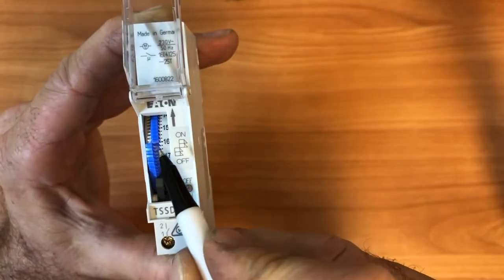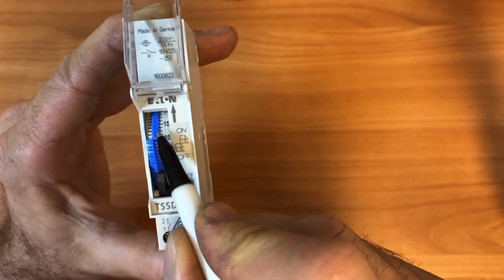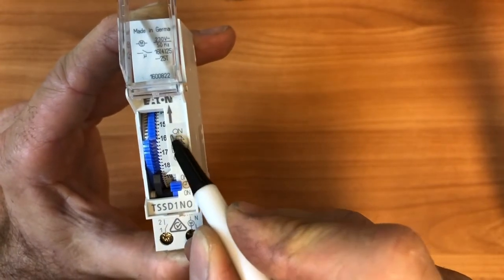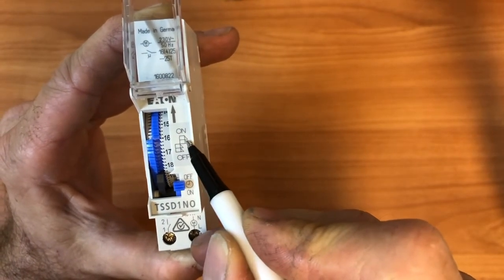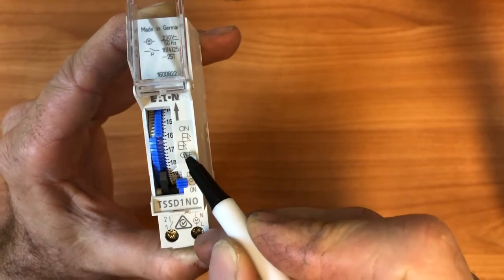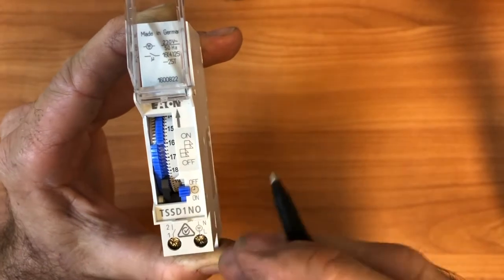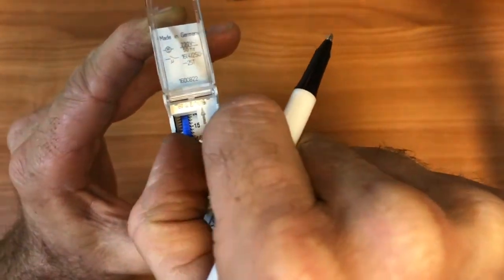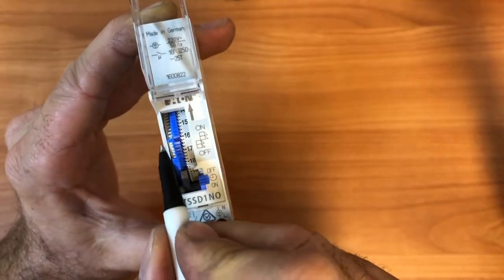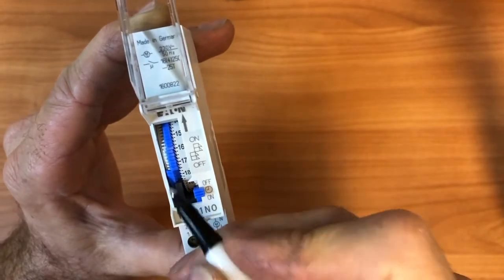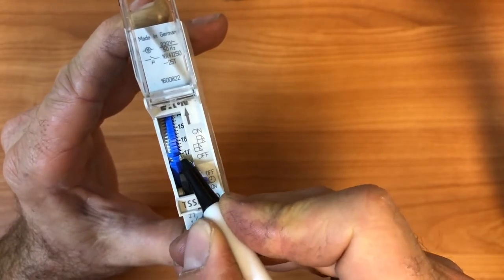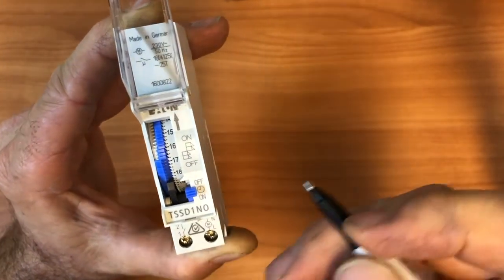And in this case, you can see that these divots here are to the right, and as per this little diagram here, when they're over to the right they're on. When they're over to the left, as it is past 1600, it's off. And you can easily adjust these by just grabbing them with the edge of your finger or with a small screwdriver or a pen or something like that, and just adjust them over as required.